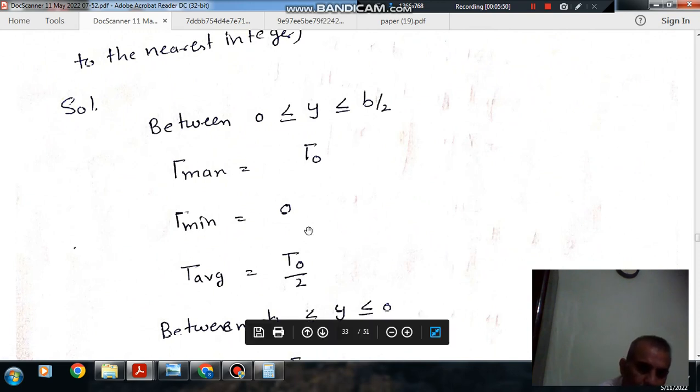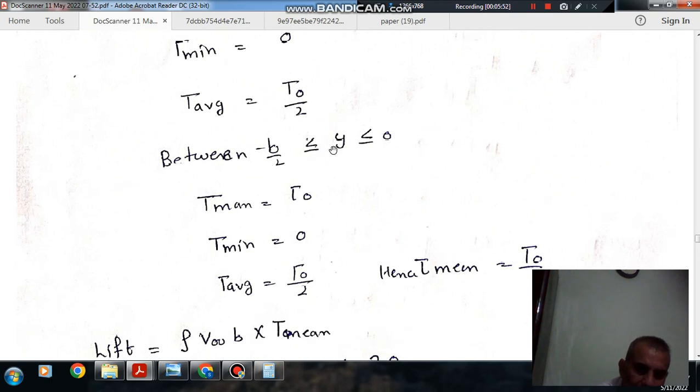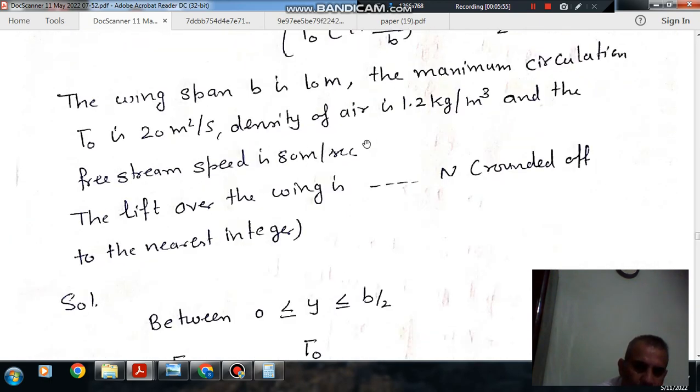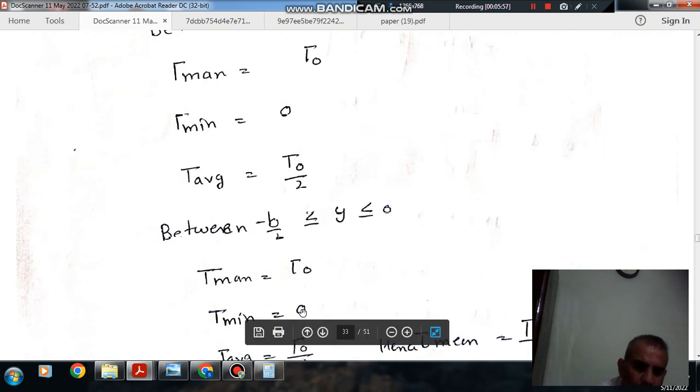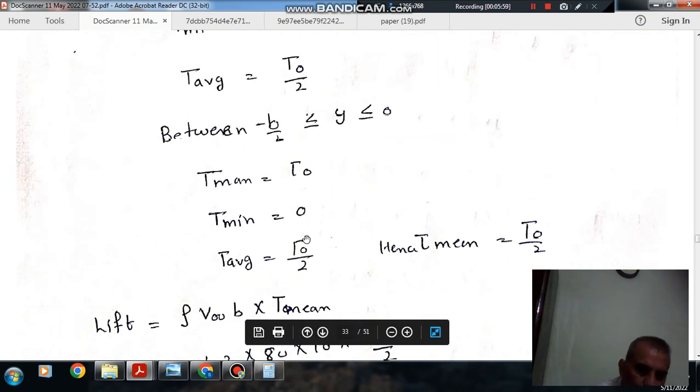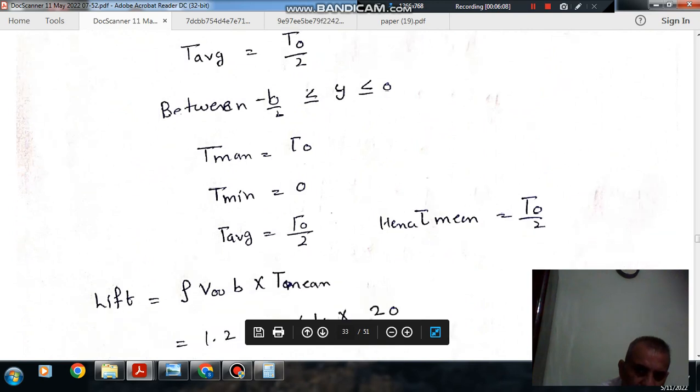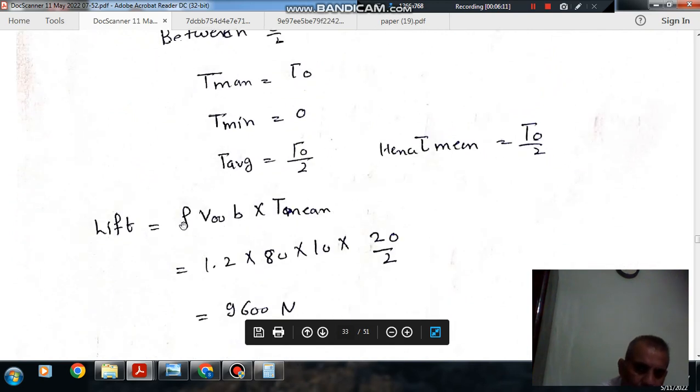The average value is Γ₀/2. In this region the average is Γ₀/2. Taking the mean value of circulation across the span, the average circulation is Γ₀/2.